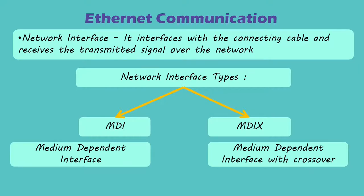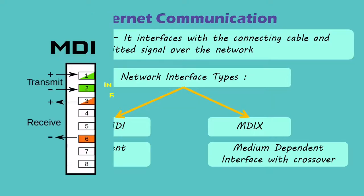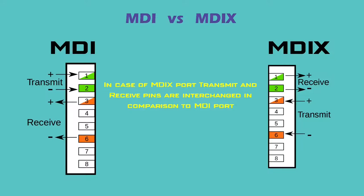To understand the difference between the two types of port, go through the pinout diagram of the two types as shown here. In the case of an MDI port, transmit pins are 1 and 2 while receive pins are 3 and 6. Whereas, in the case of an MDIX port, transmit pins are 3 and 6 while receive pins are 1 and 2. So, in the MDIX port, the transmit and receive pins are interchanged.